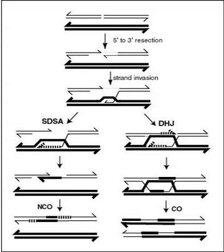In eukaryotes, recombination during meiosis is facilitated by chromosomal crossover. The crossover process leads to offspring having different combinations of genes from those of their parents, and can occasionally produce new chimeric alleles. The shuffling of genes brought about by genetic recombination produces increased genetic variation. It also allows sexually reproducing organisms to avoid Muller's ratchet, in which the genomes of an asexual population accumulate genetic deletions in an irreversible manner.